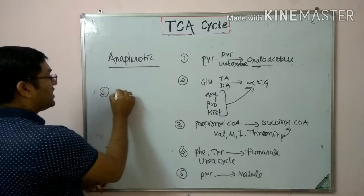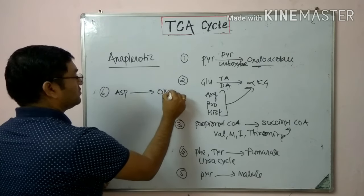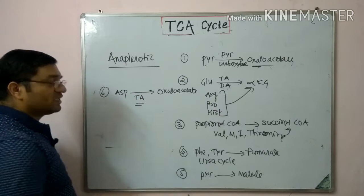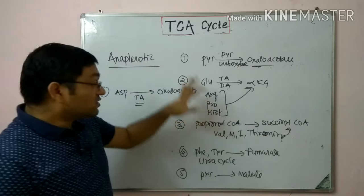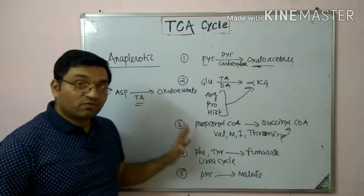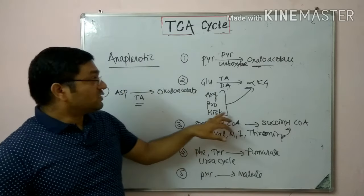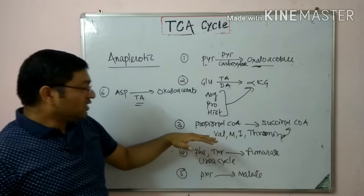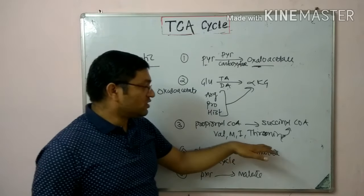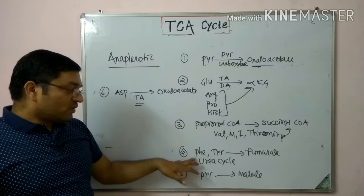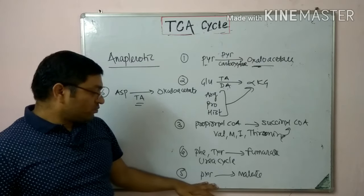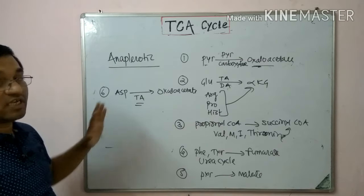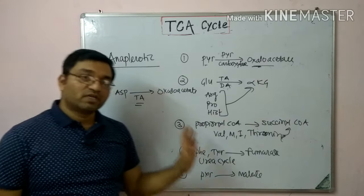Sixth: aspartate is converted into oxaloacetate by transamination reaction. So these are the six important anaplerotic reactions which fill up the intermediates of the TCA cycle: pyruvate to oxaloacetate, glutamate and related amino acids to alpha-ketoglutarate, propionyl CoA and glucogenic amino acids to succinyl CoA, tyrosine/phenylalanine and urea cycle to fumarate, pyruvate to malate by malic enzyme, and aspartate to oxaloacetate.